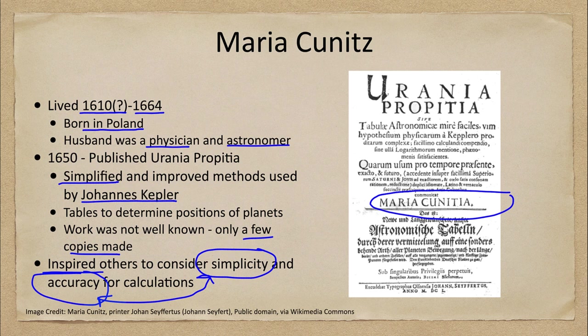Building on the work that Johannes Kepler had done a few decades before in giving us his laws of planetary motion, Maria was able to simplify and give us improved methods for determining the positions of the planets, which was something very important at the time.